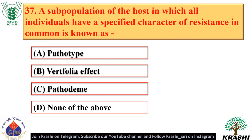Question number 37. A subpopulation of the host in which all individuals have a specified character of resistance is commonly known as pathodeme — option C.